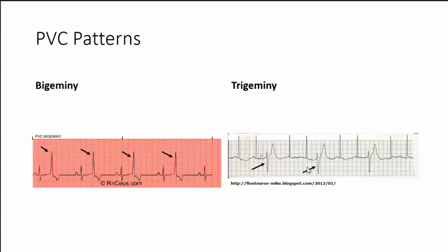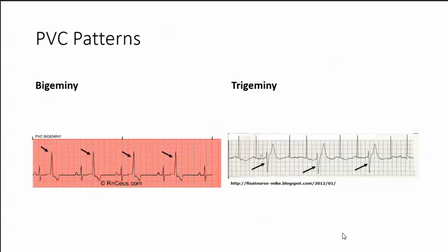Trigeminy is every third beat is a PVC. And in Quadrigeminy, every fourth beat is a PVC — so we have three normal sinus beats and then the PVC.